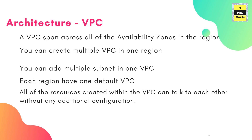If you create a VPC and have five subnets inside, all resources connected to this VPC can talk to each other by default — you don't need to do any additional configuration, similar to a layer 3 switch. Whatever VLANs you have in a layer 3 switch can talk to each other if you have a route. There is a default route, so you don't need to do anything. Inside a VPC, all subnets can talk to each other.